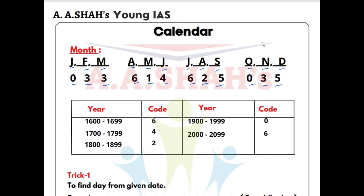To recap all month codes: January, February, March is 0, 3, 3. October, November, December is 0, 3, 5. April, May, June is 6, 1, 4. And July, August, September is 6, 2, 5. These are the codes for the months.